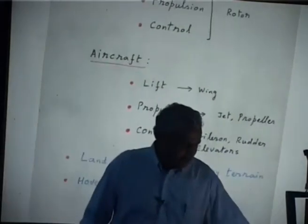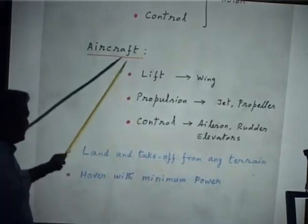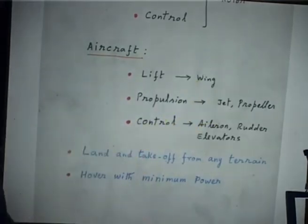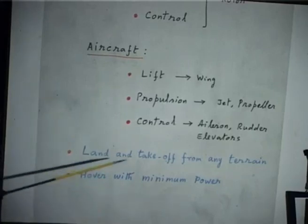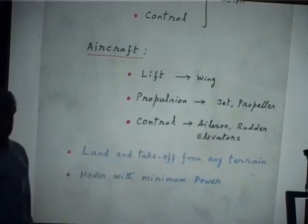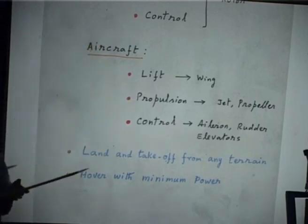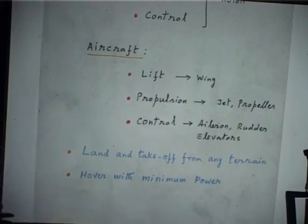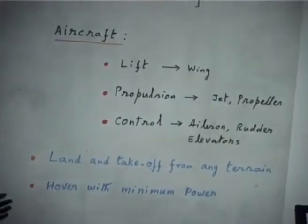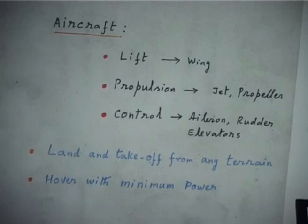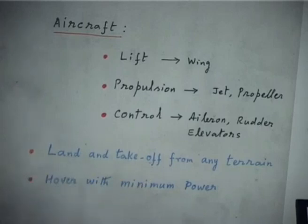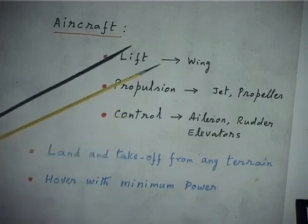In an aircraft, you have a wing to take care of lift. For propulsion you have separately a jet or a propeller. For control you basically use ailerons, rudder, elevators, etc. This is the traditional aircraft. The key difference is that helicopters can land and take off from any terrain — you do not need a runway. It can land on a rooftop, in a dense area — you need some clearance. Whereas an aircraft cannot do that. It is like a vertical takeoff and landing — VTOL. This is the advantage of helicopters.